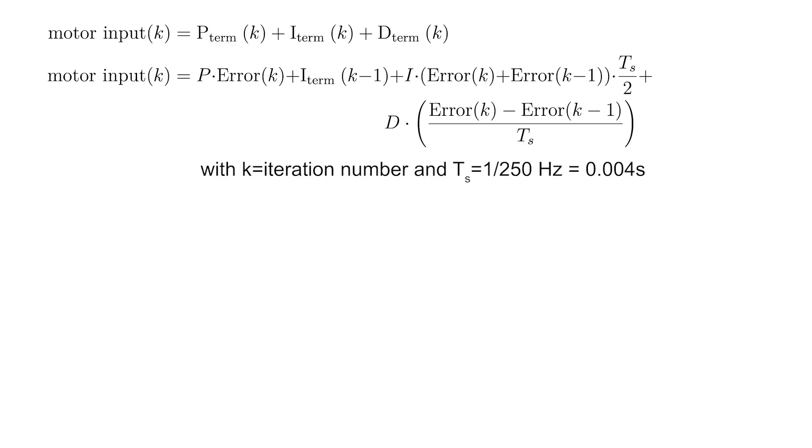For a 250 Hz loop, the iteration length is equal to 4 ms. Now, how can we go from this equation in the discrete time domain to a transfer function in the frequency domain?